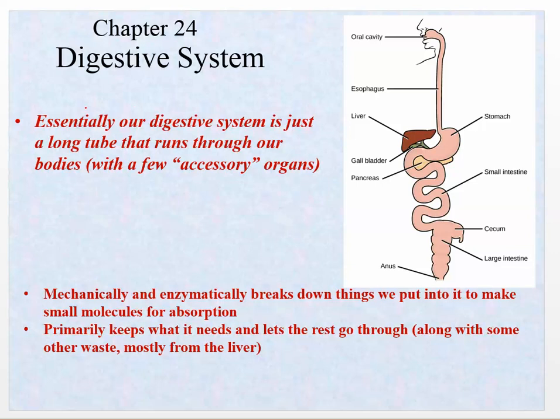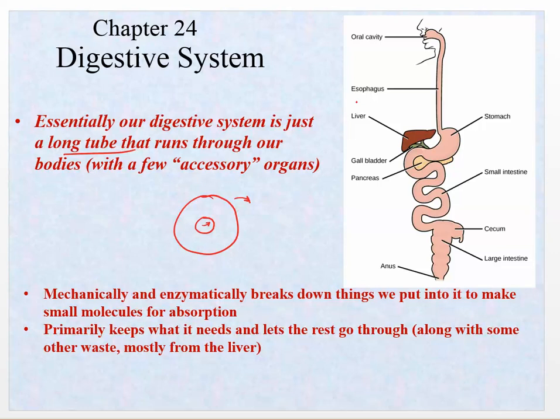Our digestive system is essentially a long tube that goes all the way through the body and out the other end. Think of it like a donut — a donut has a hole in the middle. If something moves through the middle, you wouldn't say it's in the donut. So when something is ingested, it has to be absorbed; otherwise it is technically still outside the body. If you swallow a marble or a quarter, that thing will pass all the way through and never technically enter the body — it won't be absorbed.